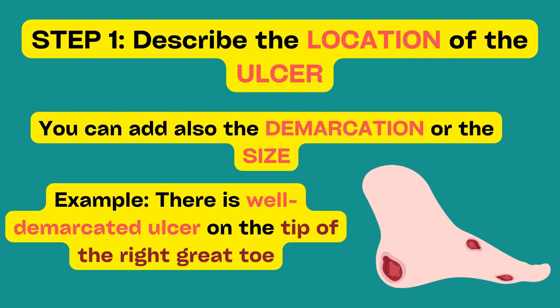When you are given an ulcer, the first thing that you would say is the location of the ulcer. You may take it to the next level by commenting on the demarcation or the size. If you can tell those characteristics, extra points may be awarded. For example: there is a well-demarcated ulcer on the tip of the right great toe.